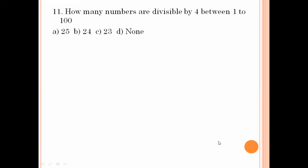How many numbers between 1 to 100 are divisible by 4? Between 1 to 100, the highest value divisible by 4 is 96. So 96 divided by 4 equals 24. Option number B is the right answer.